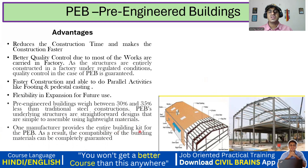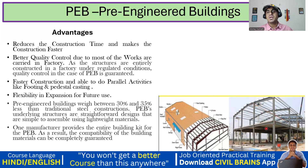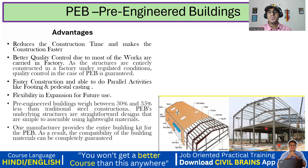One manufacturer provides the entire building kit for PEB, so compatibility of building materials can be completely guaranteed. When you put up a PEB structure, everything — columns, rafters, purlins, sag rods — comes from one particular factory or agency. This ensures good quality control and easier procurement management. In contrast, with concrete structures, steel comes from one vendor, concrete from another, and shuttering from yet another.